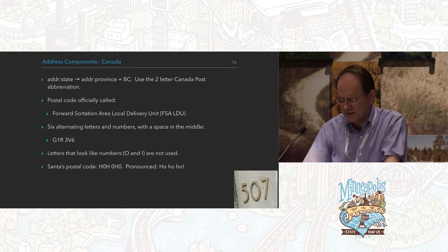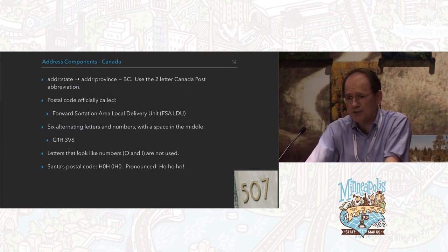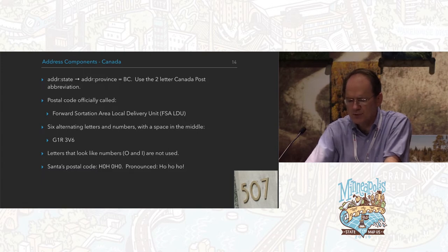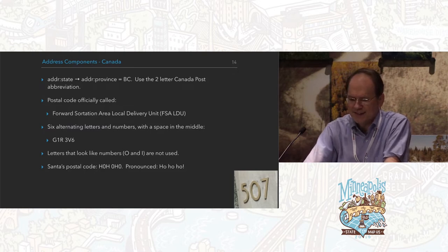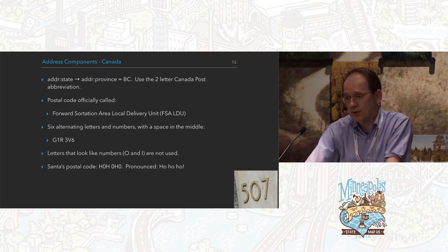I'll briefly touch on Canada — I'm only going to talk about places I've actually been. In Canada, addr:state becomes addr:province, and they use a two-letter province abbreviation. Their postal code is technically the Forward Sortation Area Local Delivery Unit — FSA LDU. It is six letters and numbers with a space in the middle, which is a great system. It basically packs a zip-plus-four into a very easy-to-use format. They don't use O and I. And Santa has its own postal code: H0H0H0.